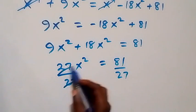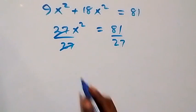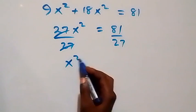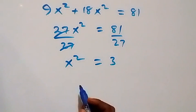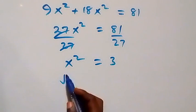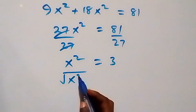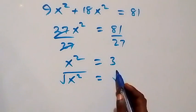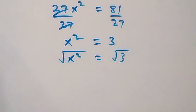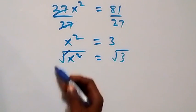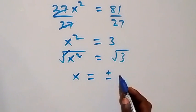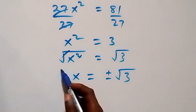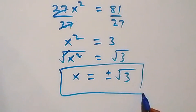Dividing both sides by 27, x² = 81/27 = 3. Taking the square root of both sides, x = ±√3. That is the solution to this problem.